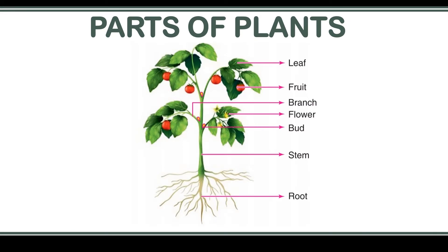In Class 3 we learnt a little bit about plants. We know that a plant has different parts like root, stem, branches, leaves, flowers, and fruits. We have learned about the leaf in some detail in the previous class. Now we will learn about the root of the plant.